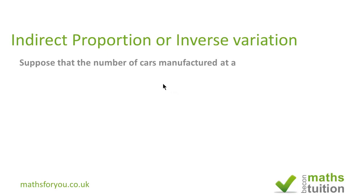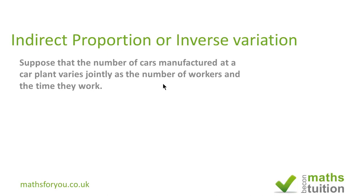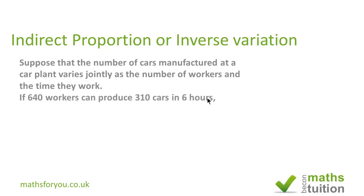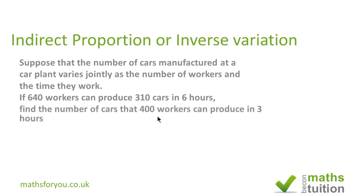You've got a car manufacturer who produces cars, and the number of cars produced depends on the number of workers and the number of hours they work. You've got 640 workers who produced 310 cars in 6 hours, and you're supposed to find the number of cars that 400 workers can produce in 3 hours.